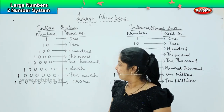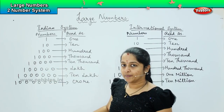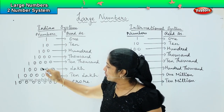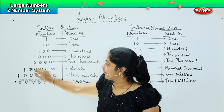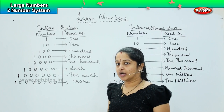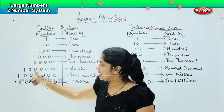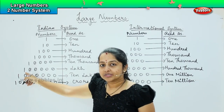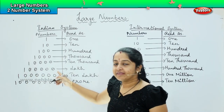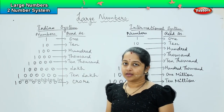Now if I add one more 0 after 10,000 — let's count: 1, 2, 3, 4, 5 — I have added five 0s behind 1. So counting the place values: 1s, 10s, 100s, 1000, 10,000, and after 10,000 it is counted as lakh. So this value — 1 followed by five 0s — is called as 1 lakh.